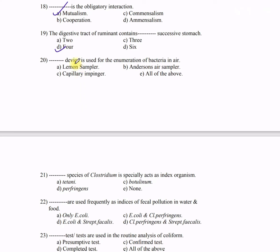Question 20: Dash device is used for the enumeration of bacteria in air — A) lemon sampler, B) Anderson air sampler, C) capillary impinger, D) all of the above. The correct answer is D — all of the above. All of these samplers are used for sampling air and enumeration of bacteria in air.